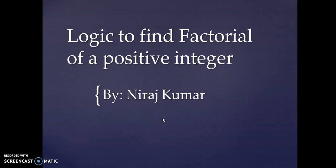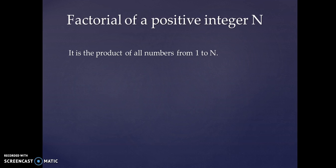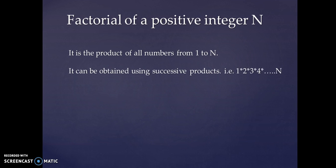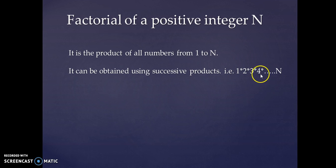Good morning, I am Neeraj Kumar and today I am going to discuss the logic to find the factorial of a positive integer. It is a product of all numbers from 1 to n and can be obtained by using successive products — that is, multiplication of all the numbers 1, 2, 3, 4, and so on.